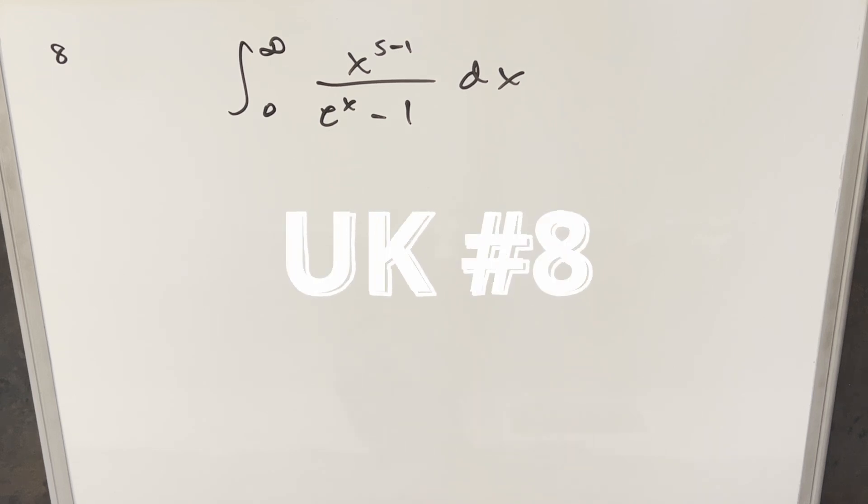Okay, we have a good one here today. This one's from the UK integration B problem number eight. We have the integral from zero to infinity of x to the s minus one over e to the x minus one dx.